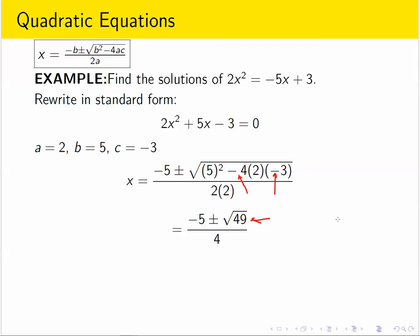And then the square root of 49 is 7. And finally, we can write down our two explicit answers. Negative 5 plus 7 over 4 is 1 half, and negative 5 minus 7 over 4 is negative 3.